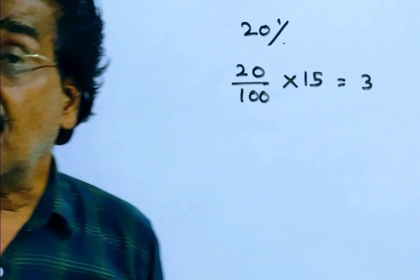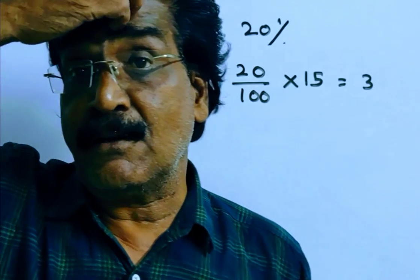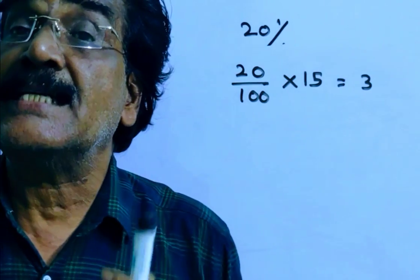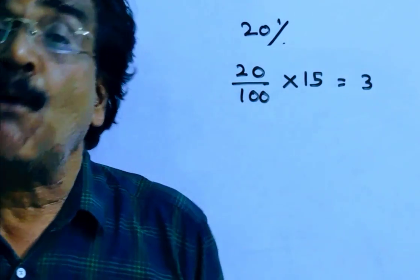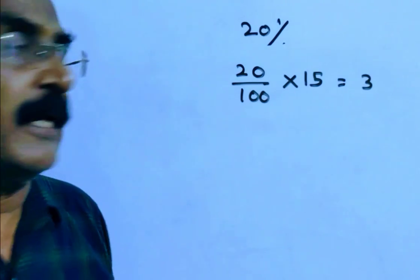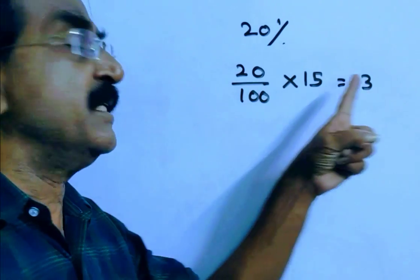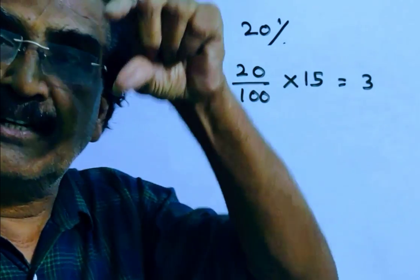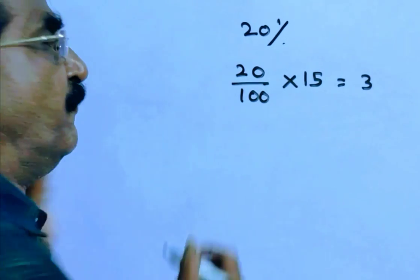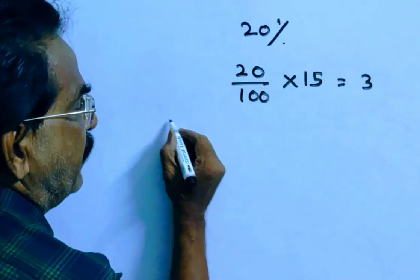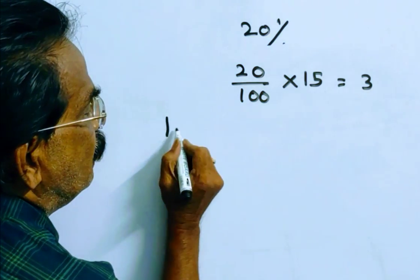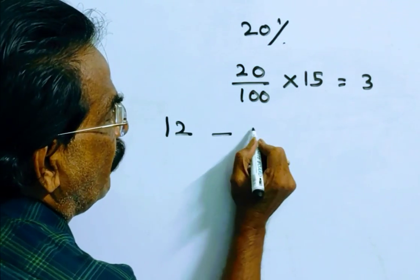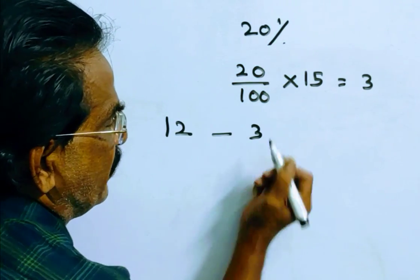Because of this reduction, a man gets 12 more mangoes. That means this 3 rupees is the reduced price of 12 mangoes.